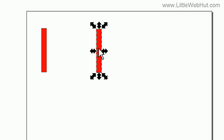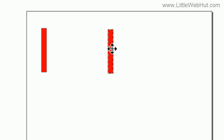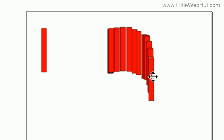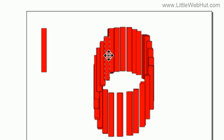I'm going to press and hold the left mouse button on this rectangle and move it around. While I'm moving it, I'm also going to press and hold the space bar. As I do that, you see that multiple copies of this object are made.